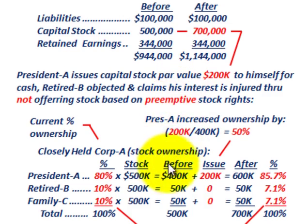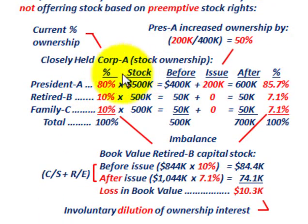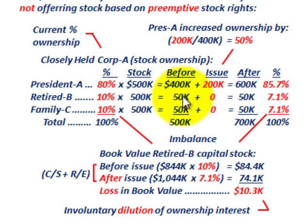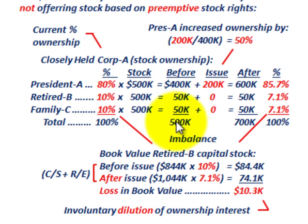Let's look at what we're talking about here. Looking at our stock distribution: we have 80% to the president, retired stockholder B at 10%, and family members at 10%. Our stock currently, before this additional issue, is sitting at $500,000. So before this additional $200,000 was issued, president A would have $400,000 at 80%, and retired stockholder B and family members C would each have $50,000 in capital interest. Total capital interest is $500,000.